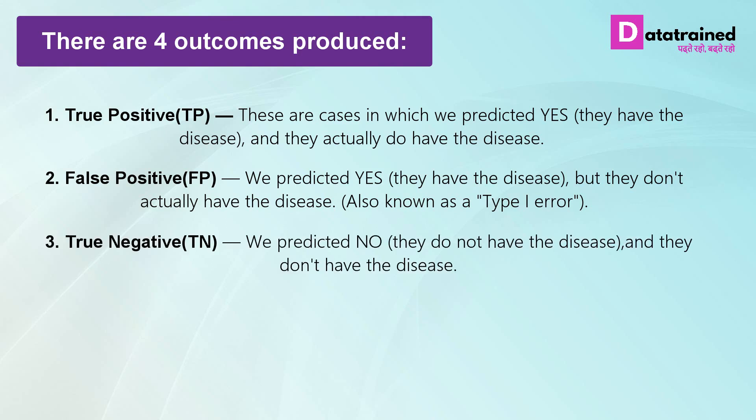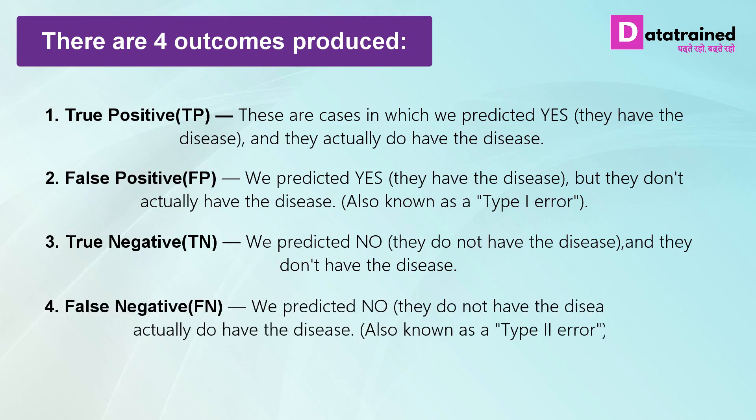True negative: We predicted no, they do not have the disease, and they don't have the disease. False negative: We predicted no, they do not have the disease, but they actually do have the disease. Also known as type 2 error.